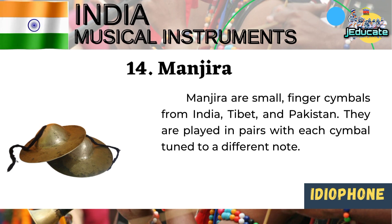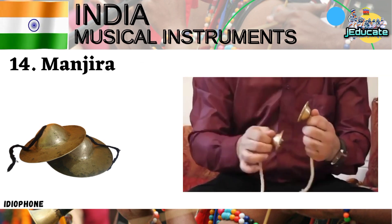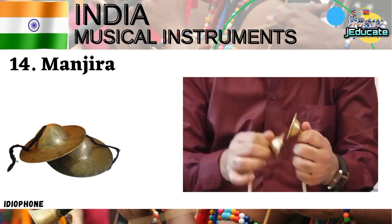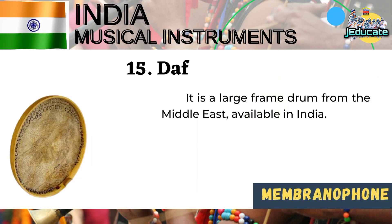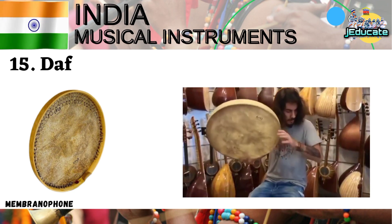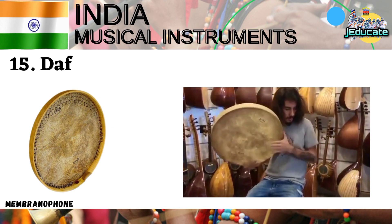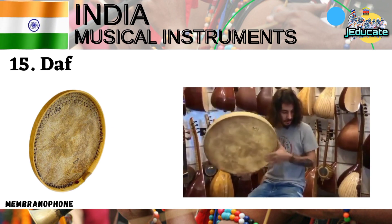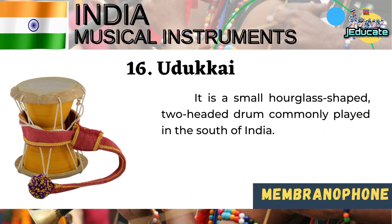Number 14, Manjira — these are small finger cymbals from India, Tibet, and Pakistan. They are played in pairs with each cymbal tuned to a different note. Number 15, Dof — it is a large frame drum from the Middle East, available in India. Number 16, Udukai — it is a small hourglass-shaped, two-headed drum commonly played in the south of India.